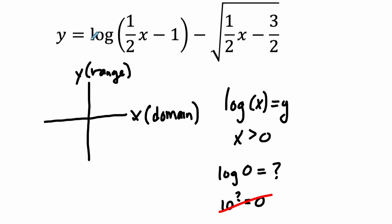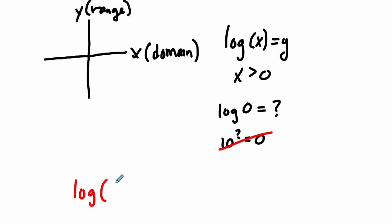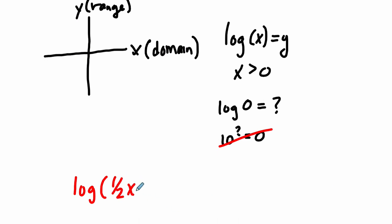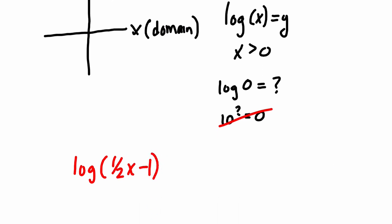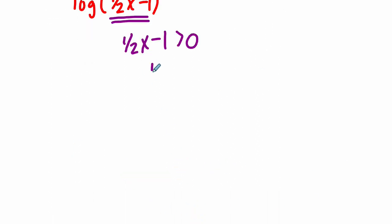When you see an equation like this, it looks a little bit different, but the idea is essentially the same. The log of one half of x minus one. This time, I want to know what x values can I plug into this expression? So, the whole thing, one half of x minus one is greater than zero.